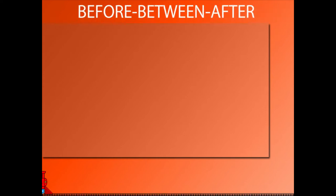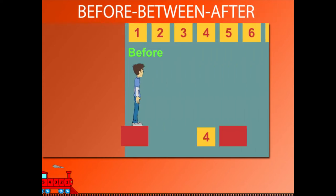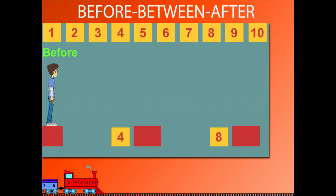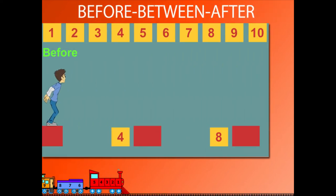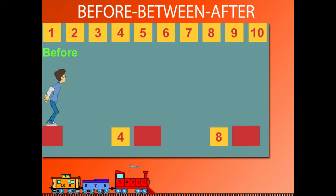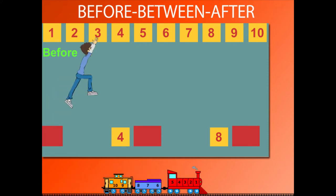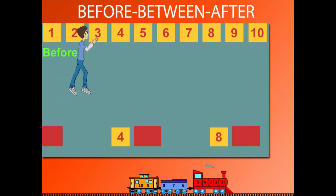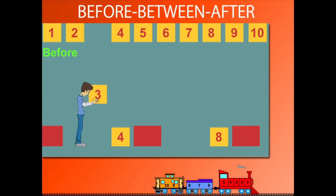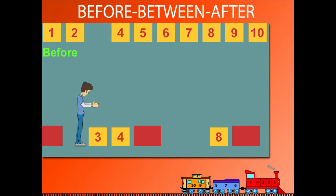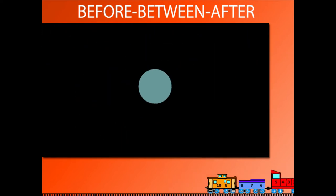Before, Between and After. Here is Sammy pulling out numbers from the top. What comes before 4? Sammy pulls down 3.